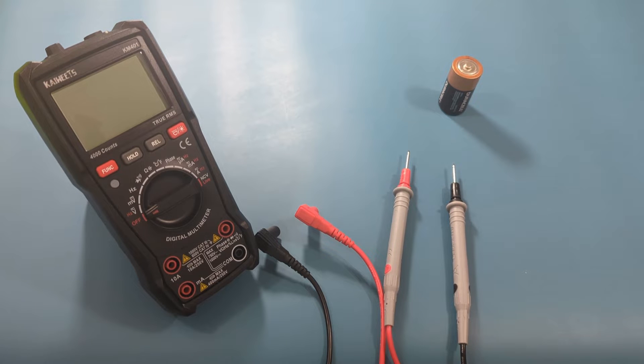In the multimeter, the red probe represents the positive terminal, while the black probe indicates the negative terminal.